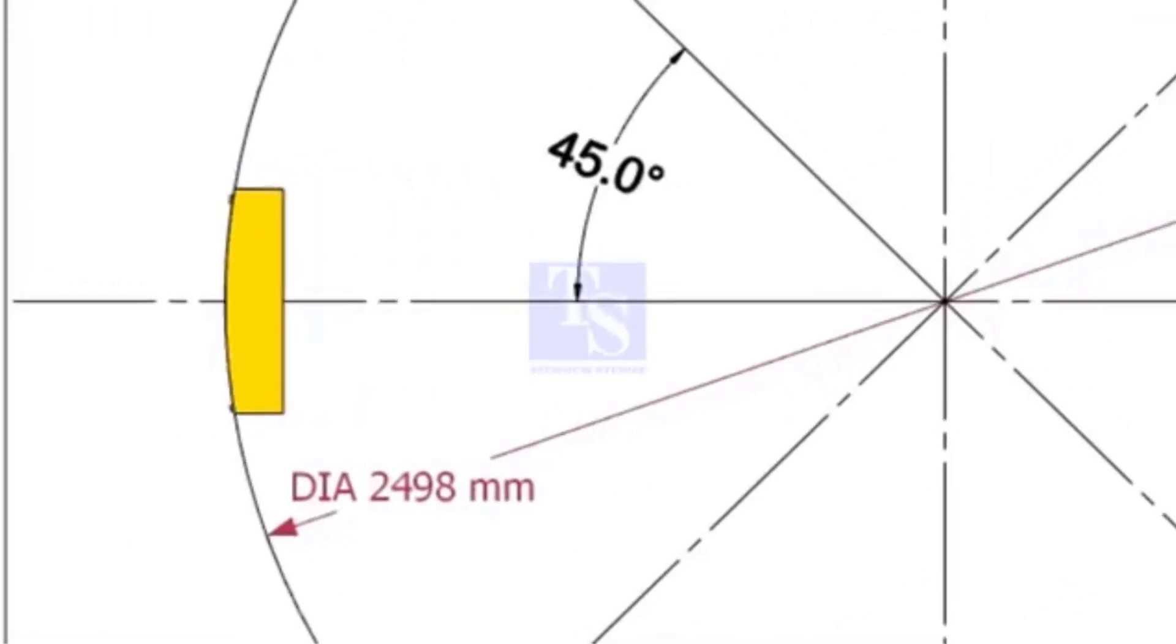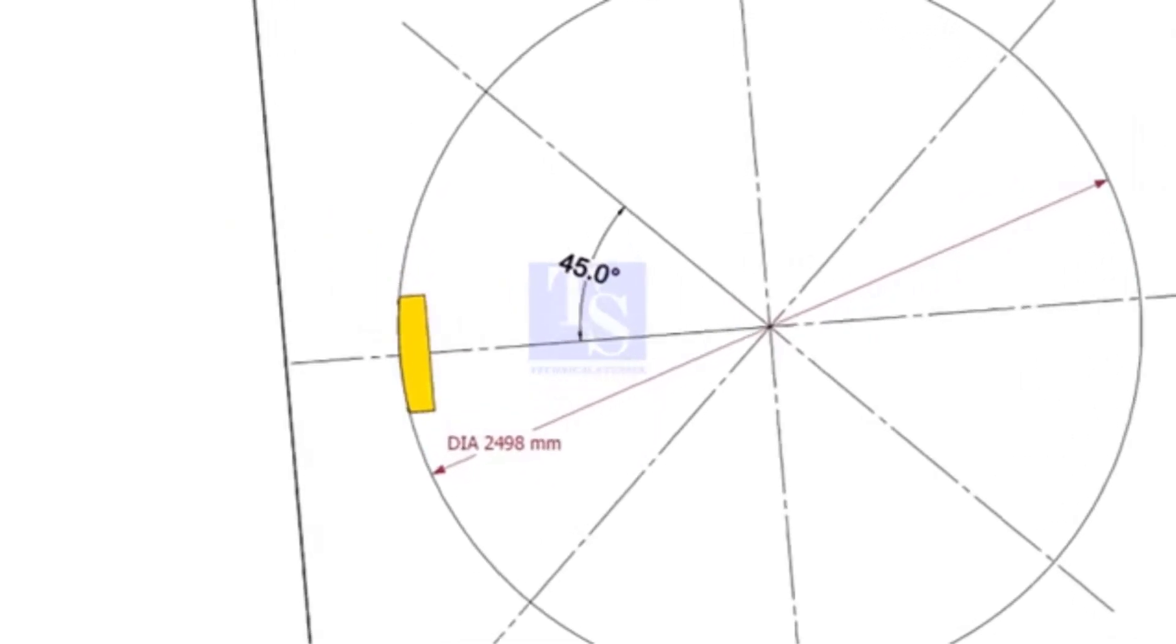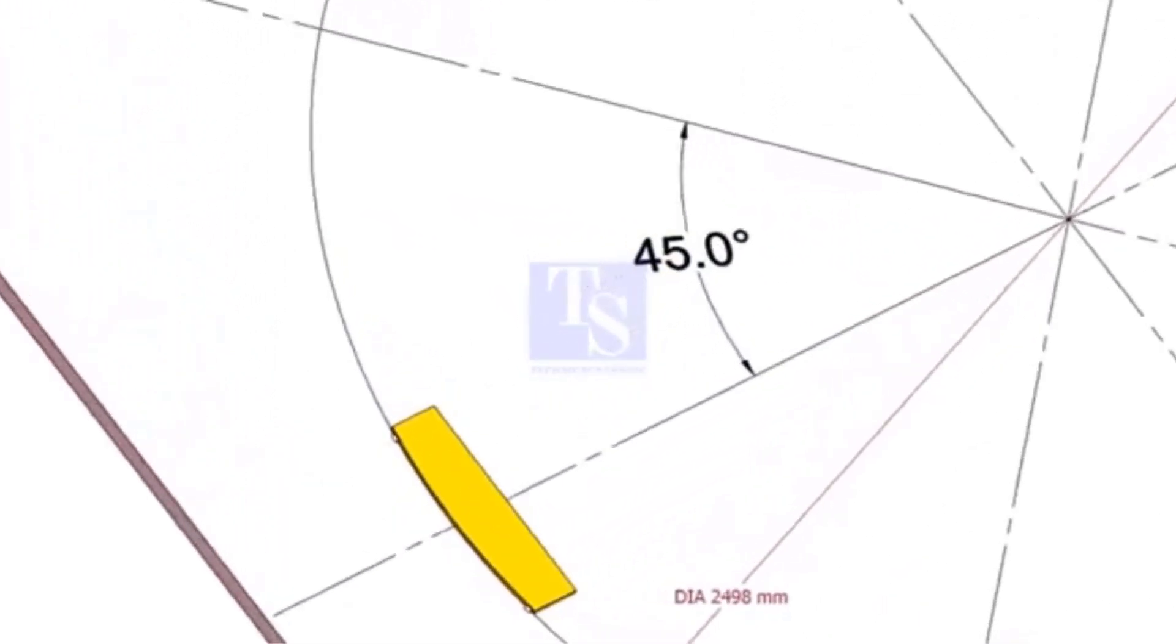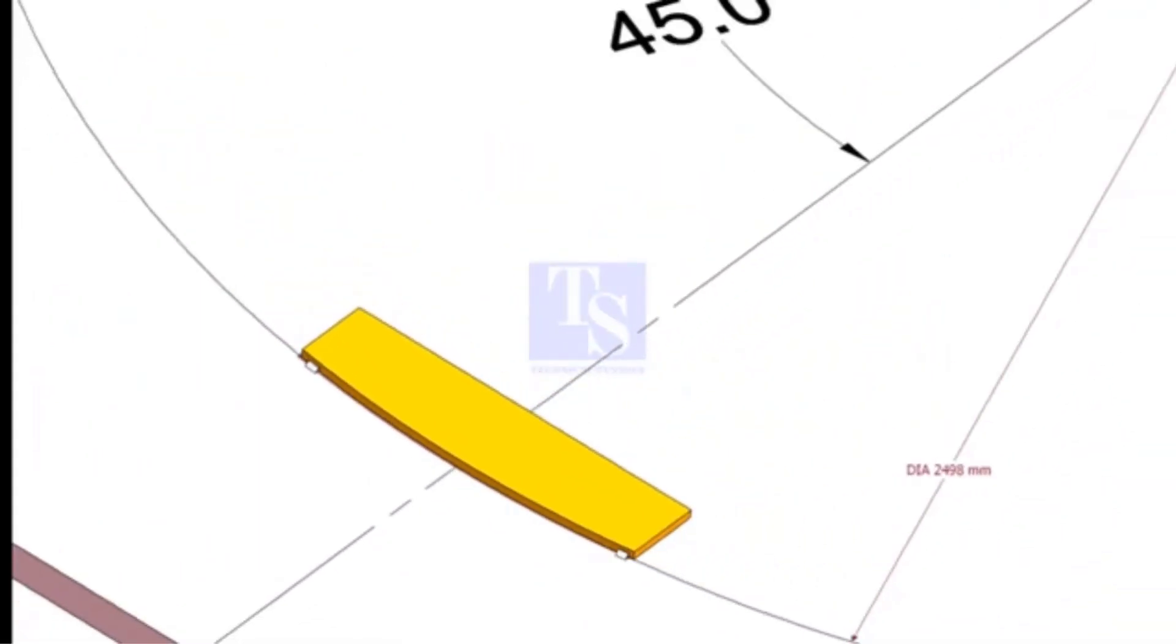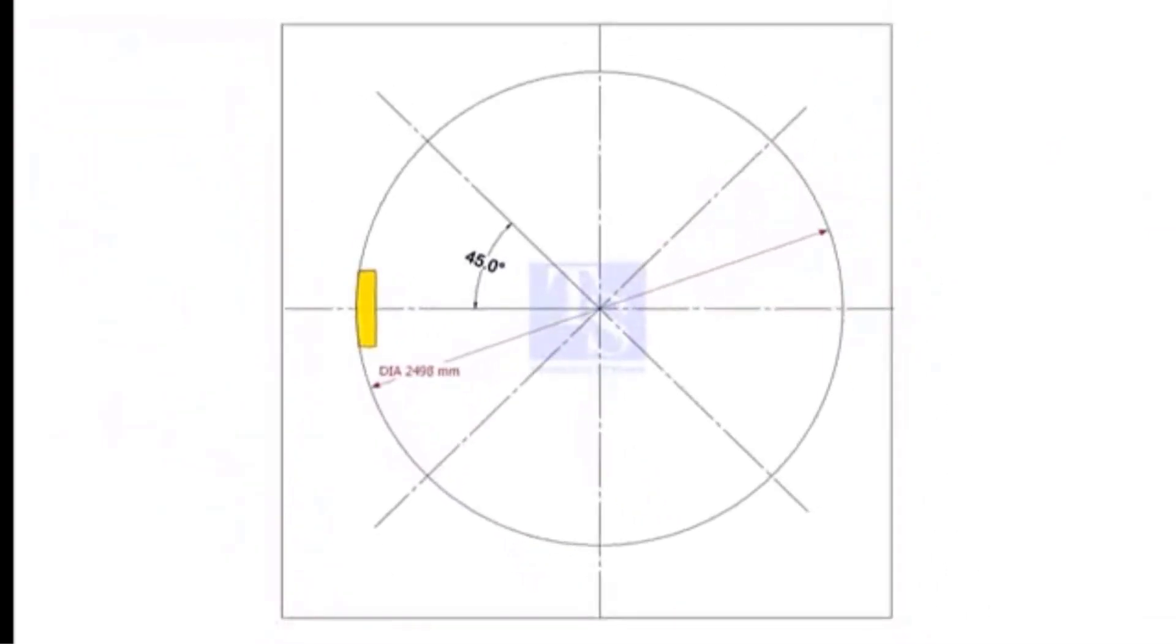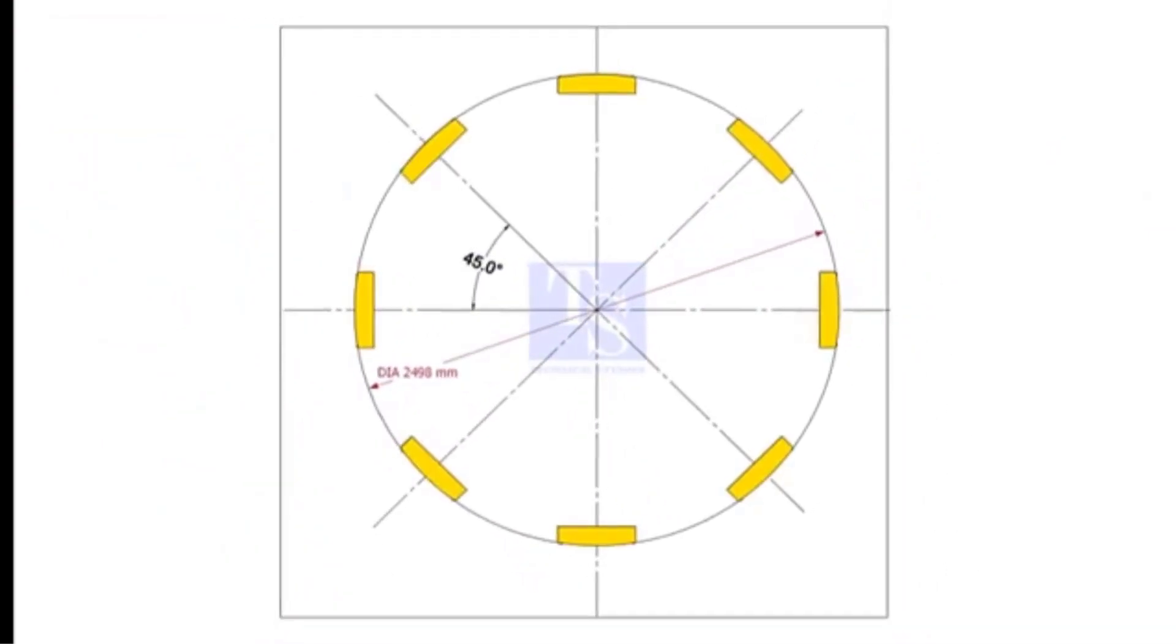Put one moon plate exactly on the circle as shown. Tack weld the moon plate with the plate. Don't weld too big tack. Tack weld all the moon plates in the same way.